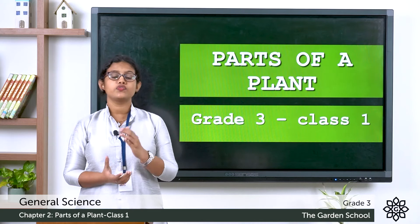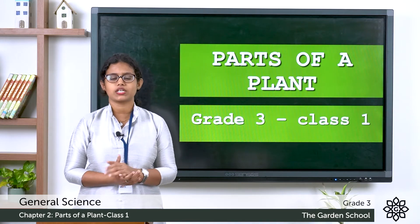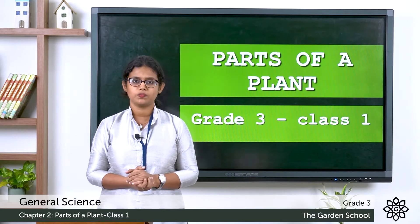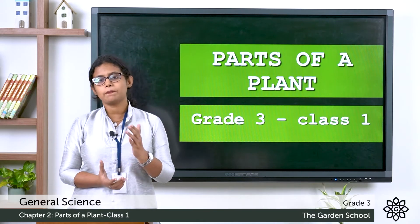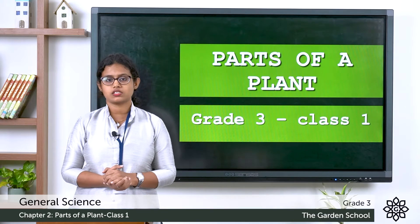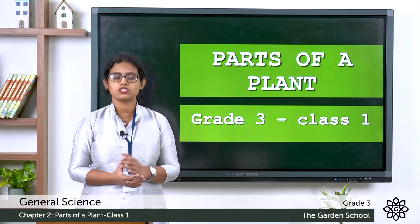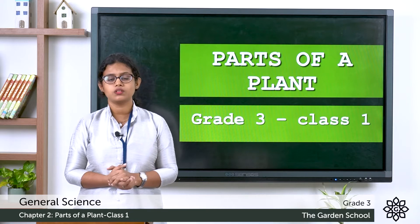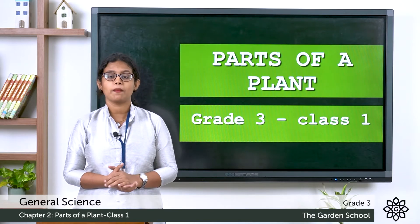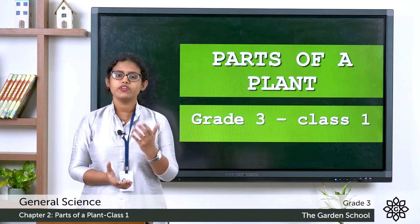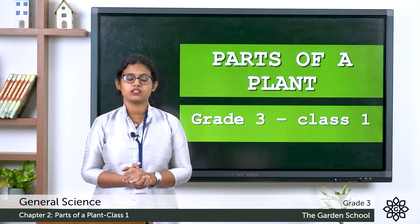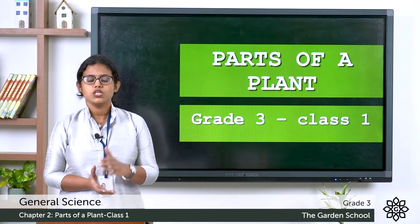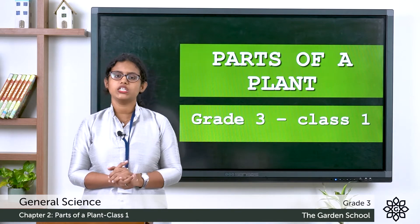We can see different kinds of plants around us — plants which are big, plants which are small. We can differentiate a plant based on its size. There are plants which are very tall, plants which are very small, and plants which are medium sized. There are also different kinds of plants like climbers and creepers. So let's discuss about each kind of plant.